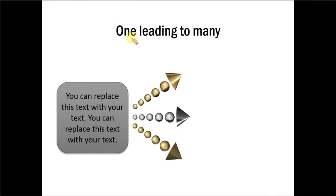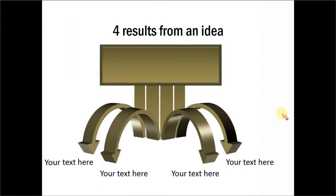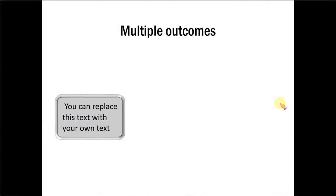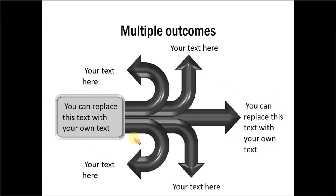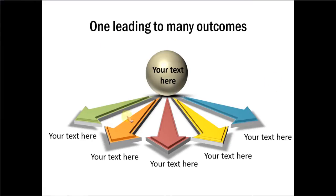This is one such example — a one-leading-to-many relationship where you can see how one factor leads to many, and you can always copy and add more factors. This one shows four results from one idea, using a 3D option in PowerPoint to make the diagram look visually appealing. Here is another example showing multiple outcomes from one core factor using bevel for visual interest, and a final example showing one leading to many outcomes with 3D bevel options. So there are far more interesting ways to show a one-to-many relationship than using just a Table List diagram.